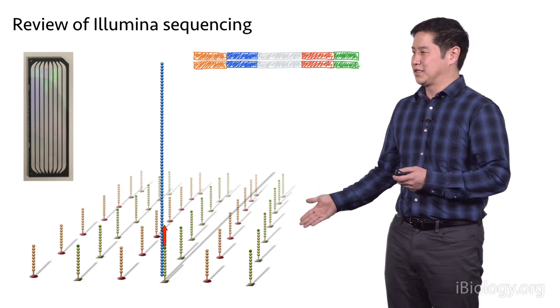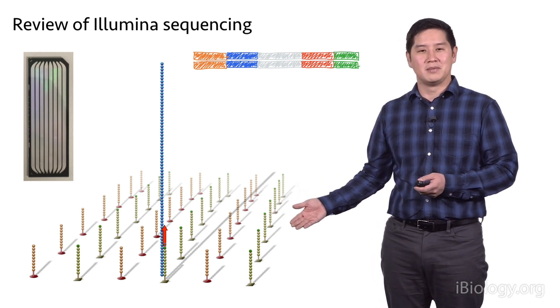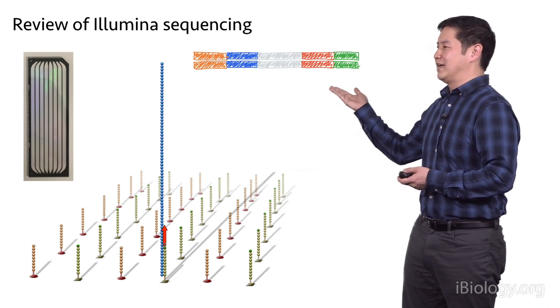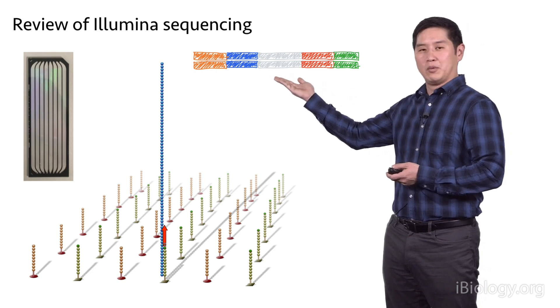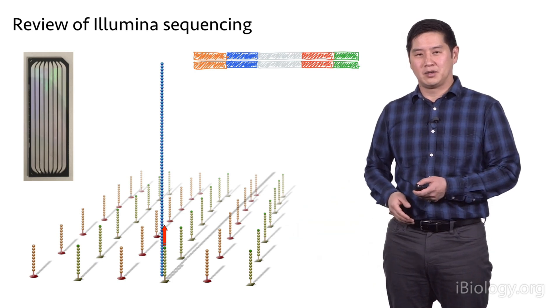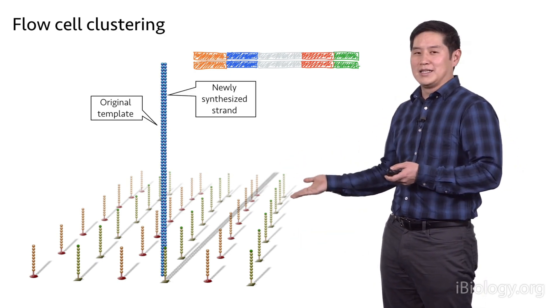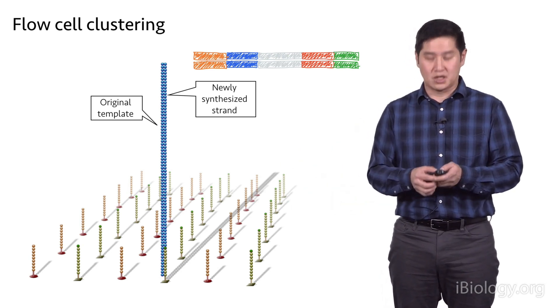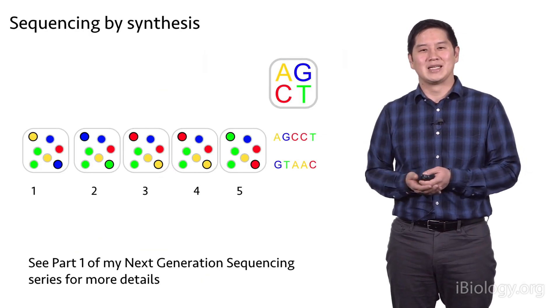Within these flow cells are oligos on the surface that capture libraries to be sequenced. To prepare these libraries, we need to add adapters, which are these colored portions, onto our inserts that we want to sequence. Once the library has been captured onto the surface through multiple rounds of amplification, you generate many copies of each strand. These clusters of molecules are what gets sequenced.